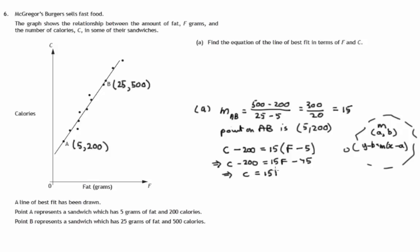We get our 15F and 200 added to negative 75, it's like taking 75 from 200, that'll be 125. So there's the equation of the line of best fit that we were asked for.